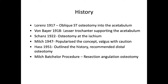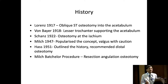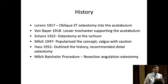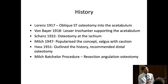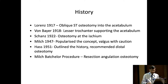It's very interesting to look at the history of this technique. As long ago as 1917, Lorenz, subsequently von Bayer, and probably Schanz is the one who possibly chose the correct site — osteotomy at the ischium. Milch in 1947 popularized the concept, and even he said at that time 'valgus with caution.' Haas in 1951 outlined the history and recommended this distal osteotomy. The classic Milch-Bachelor procedure, which most of you may have done in endemic countries, is where you resect the femoral head and do an angulation osteotomy. It's a very good procedure also in poliomyelitis.